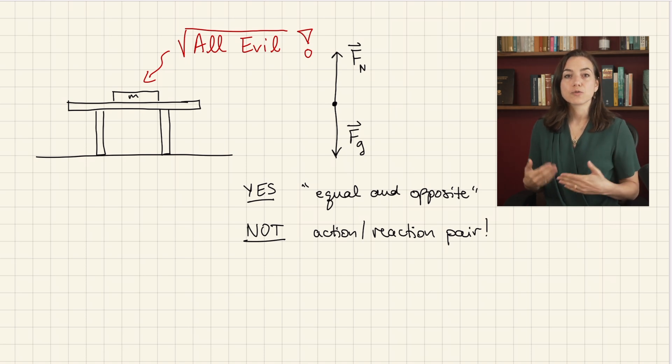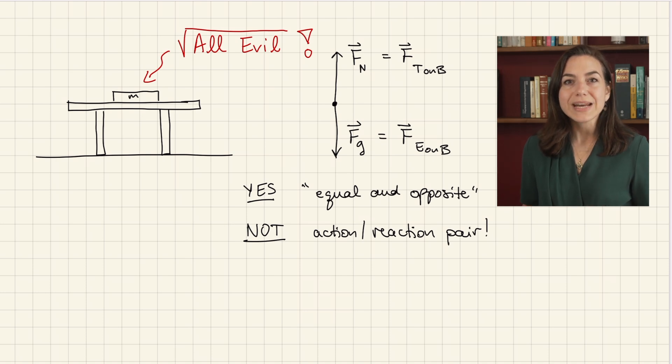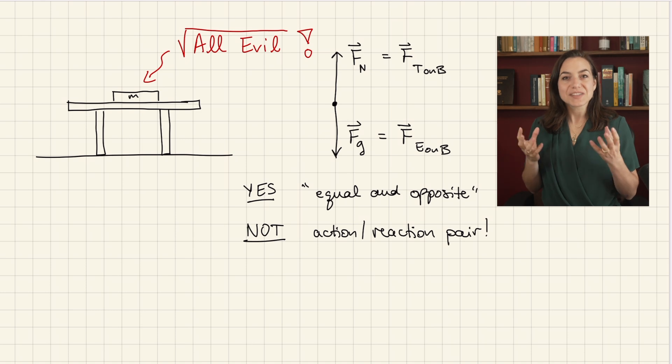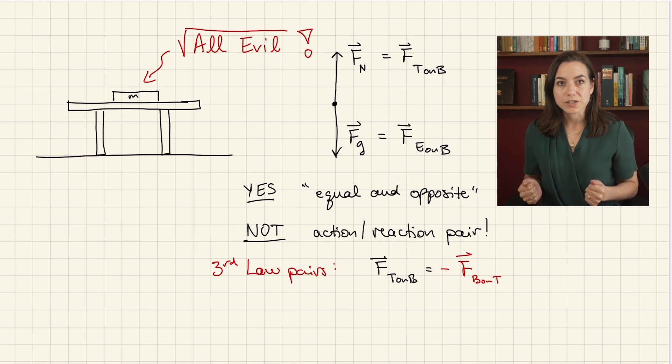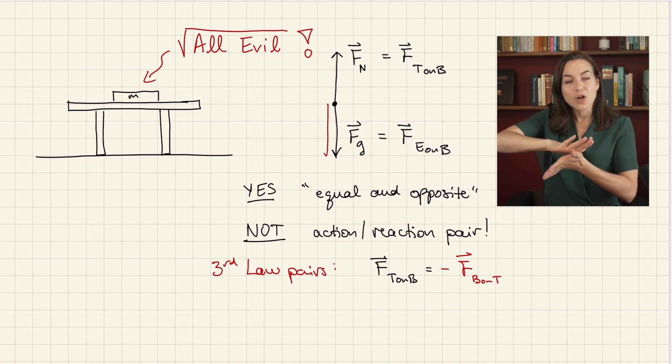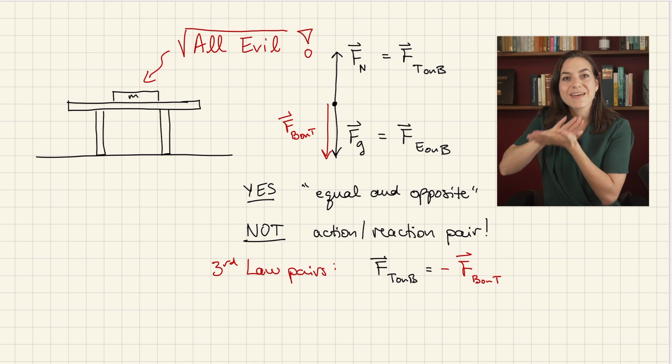The best way to sort through what is going on is to be explicit about which objects are interacting when labeling a force. So, for example, Fn is the force exerted by the table on the book. So let's write Ft on B. And Fg is the force exerted by the earth on the book. So let's write Fe on B. Just writing the forces this way already gives a big clue as to what is going on. They cannot possibly be an action-reaction pair because they are interactions between different pairs of objects. An action-reaction pair must describe the same interaction. Object A pushes object B, then B pushes back on A, like two sides of the same coin. Labeling each force with two subscripts like this makes identifying its third law pair very easy. Simply flip the order of the subscripts. So the third law pair of the normal force exerted by the table on the book is the force exerted by the book on the table.